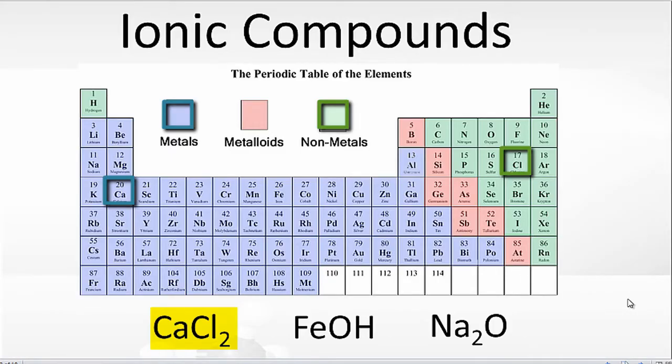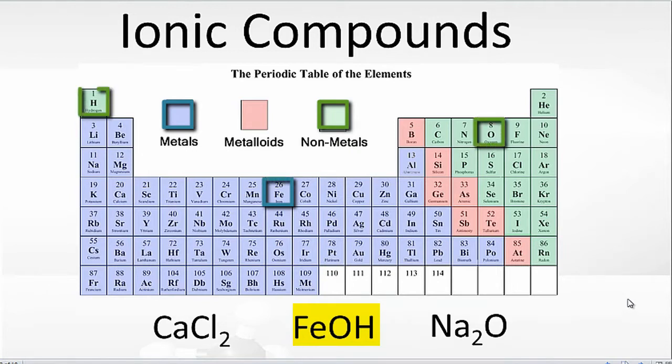For FeOH, we can see that Fe, iron, that is a metal, and then both oxygen and hydrogen are non-metals. So if we have a metal and one or more non-metals, we have an ionic compound.